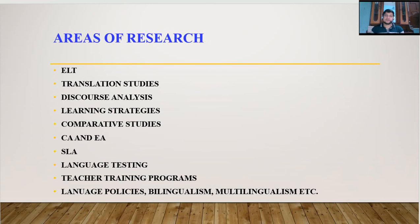What are the areas of research for students of English language? Researchers in English language can carry out research in the field of ELT, translation studies, discourse analysis, critical discourse analysis, learning strategies adopted by learners of different levels, comparative studies between different languages, contrastive analysis and error analysis, second language acquisition, language testing, teacher training programs and their effectiveness, language policies, bilingualism, multilingualism, and so on.